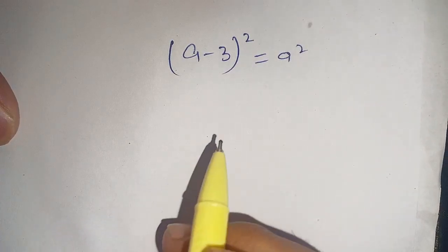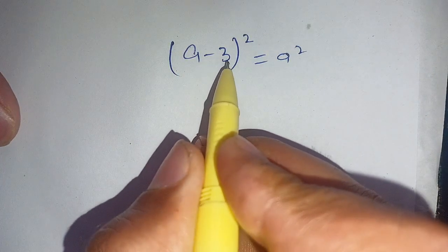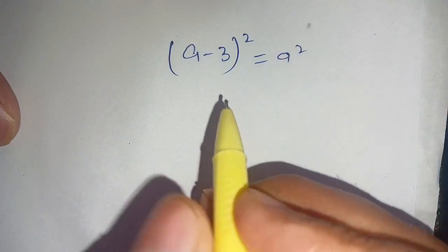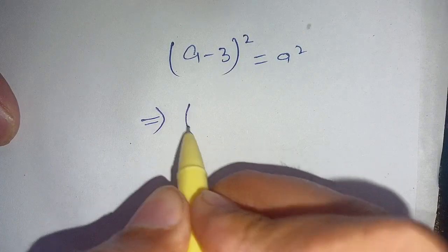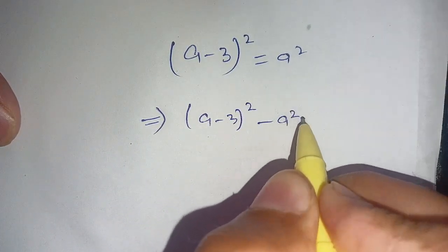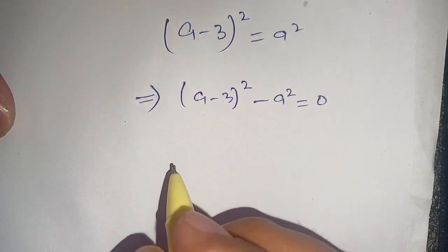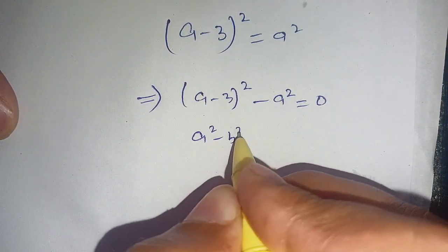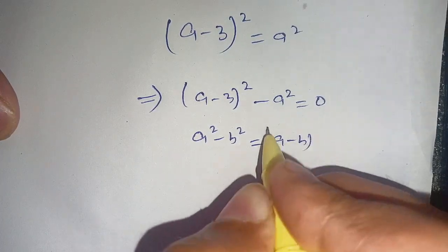Hello everyone. In today's video we are going to solve this algebra problem: (a minus 3) whole square is equal to a square. Let us solve this. We can write it as (a minus 3) whole square minus a square is equal to 0. Now we know that a square minus b square is equal to (a minus b)(a plus b).